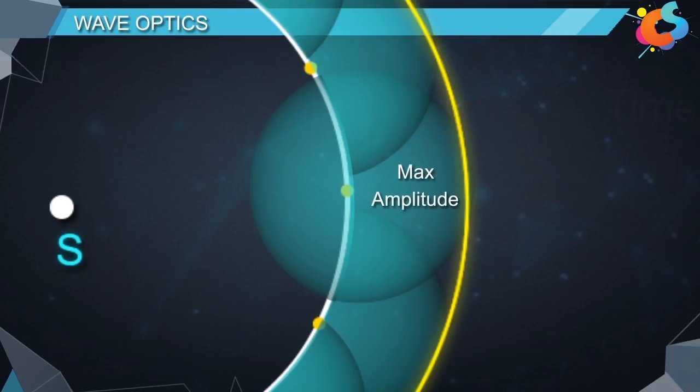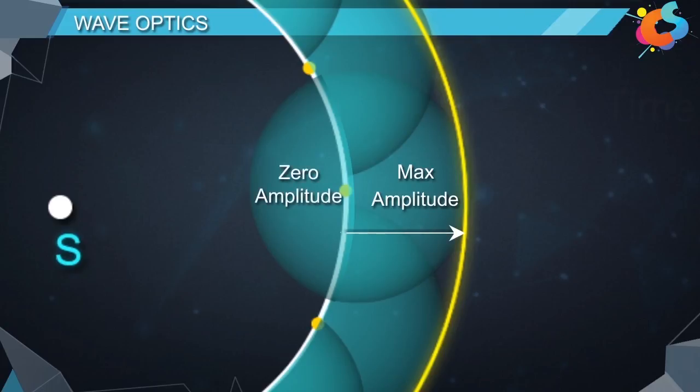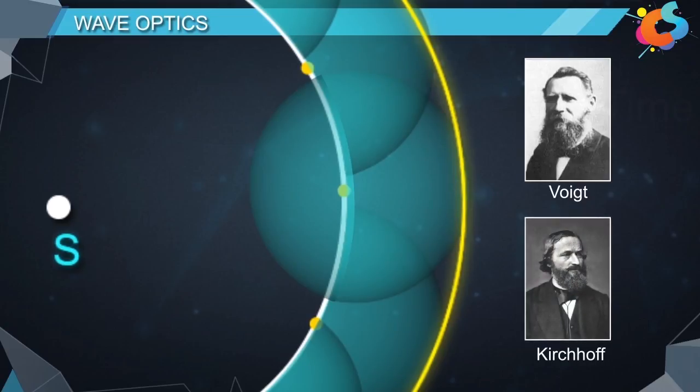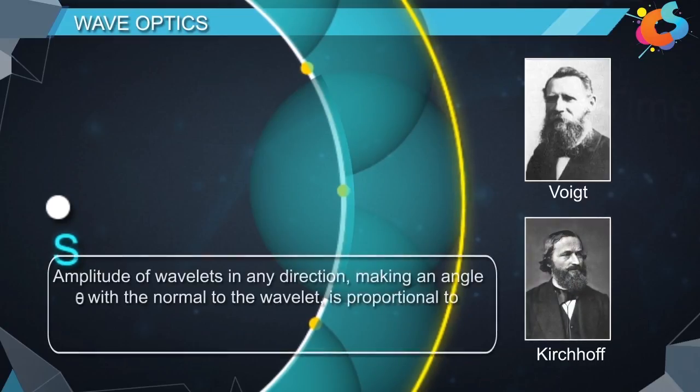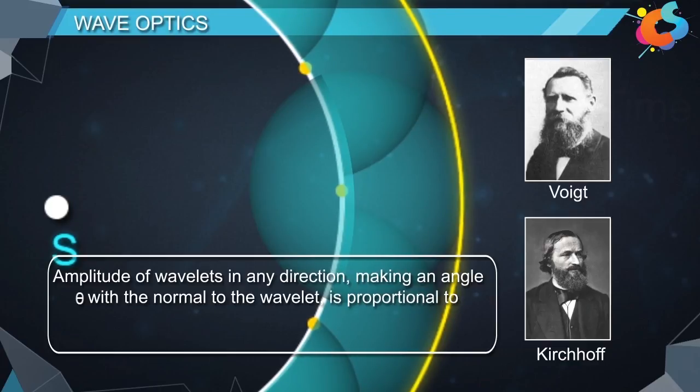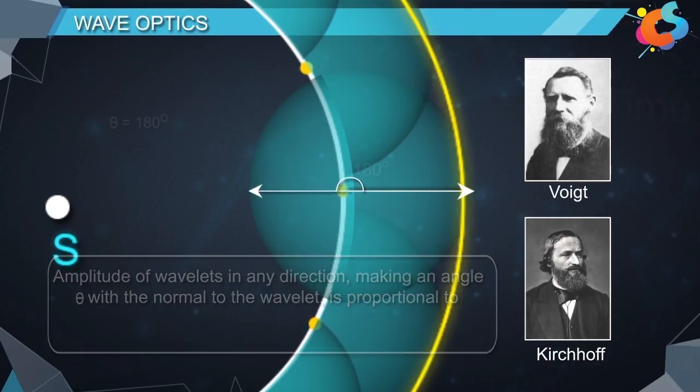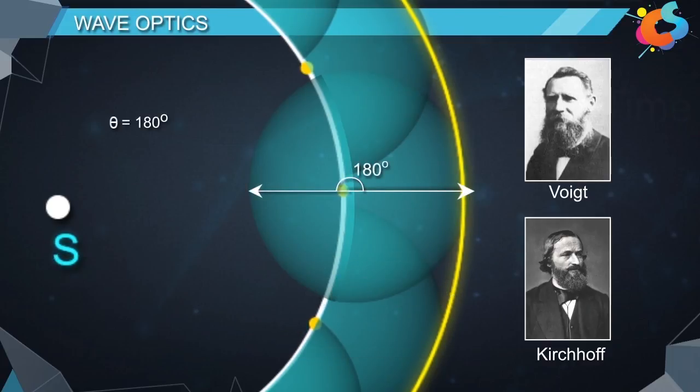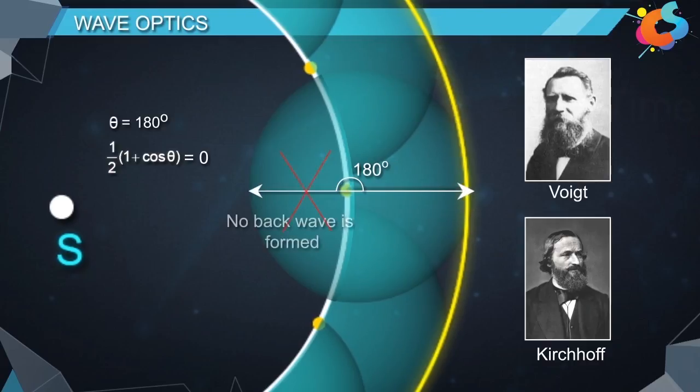To correct this problem, Huygens suggested that the amplitude of secondary wavelets is maximum in the forward direction and zero in the backward direction. Later, Voigt and Kirchhoff mathematically proved that the amplitude of wavelets in any direction making an angle theta with the normal to the wavelet is proportional to 1/2 times (1 plus cos theta). Since theta for a back wave is 180 degrees, the factor 1/2 times (1 plus cos theta) will be equal to zero. That is why there is no back wave formed.